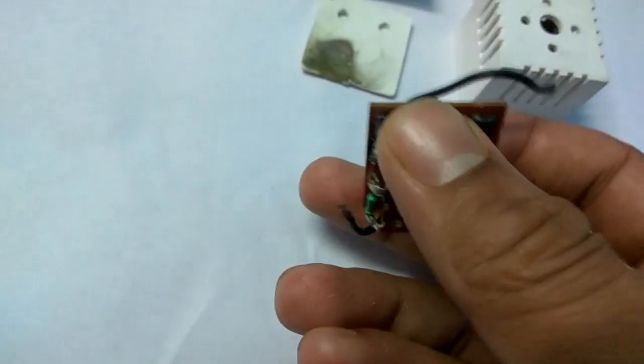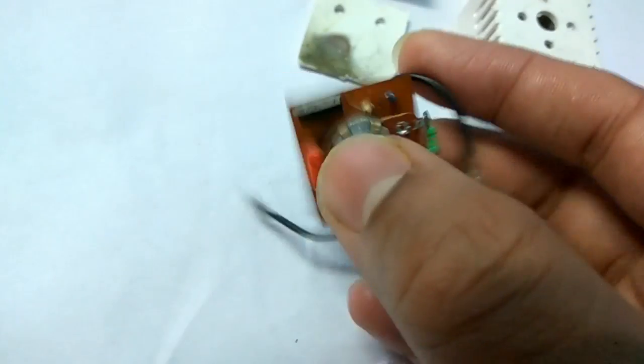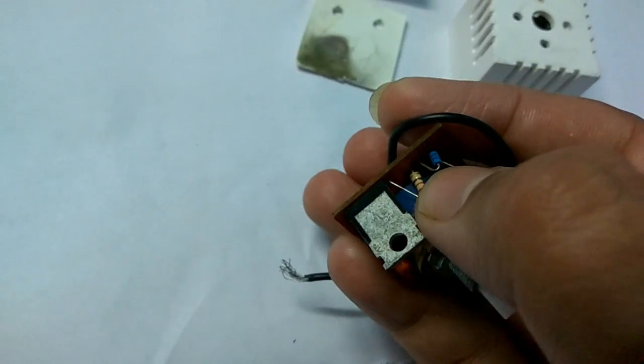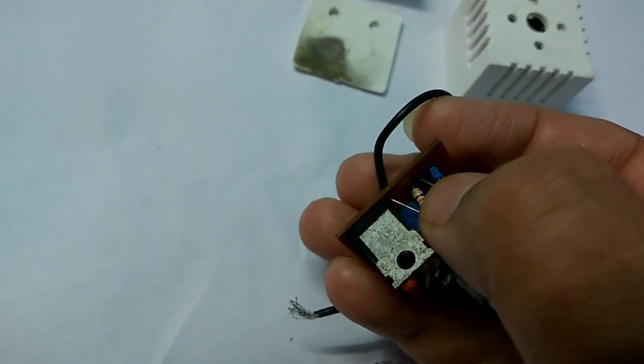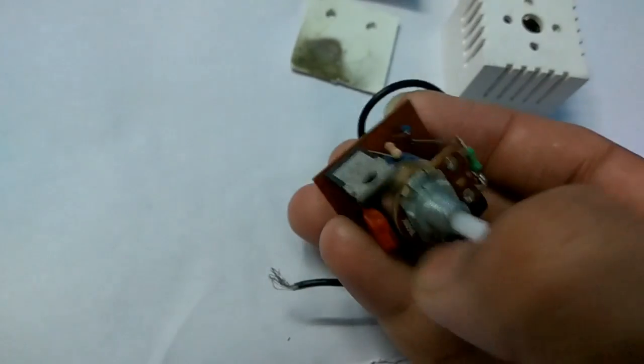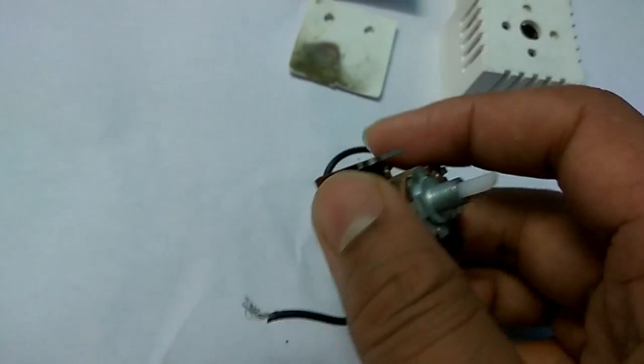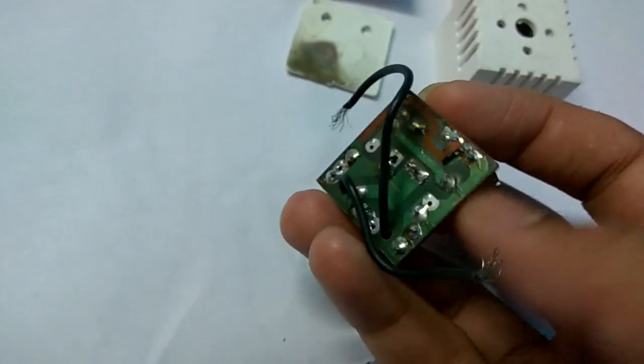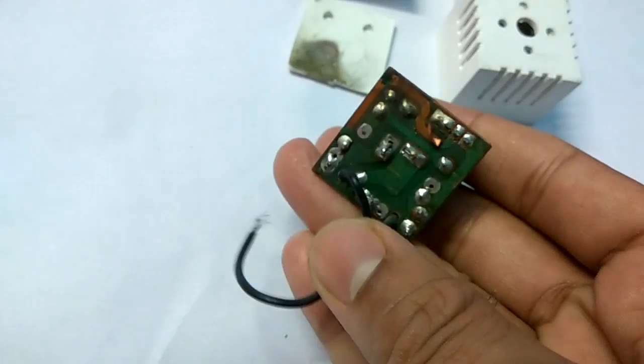This is another capacitor, and the DIAC, the DIAC is this small blue component. Here are all the things as you can see, and as it's a PCB, the circuit is being drawn just one sided.